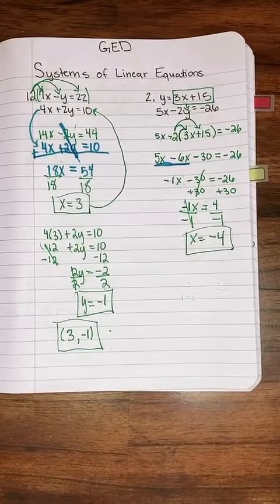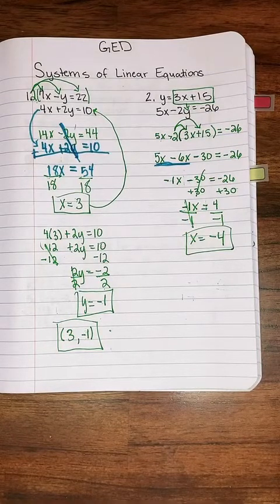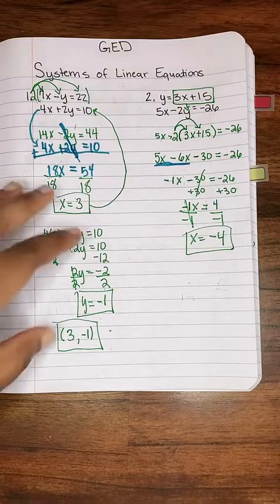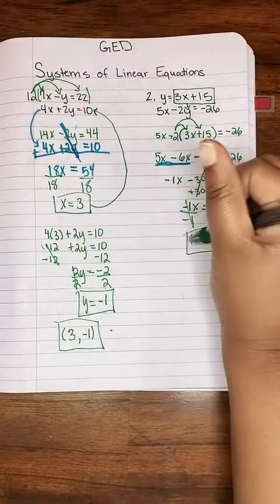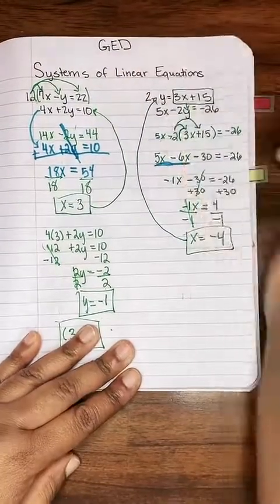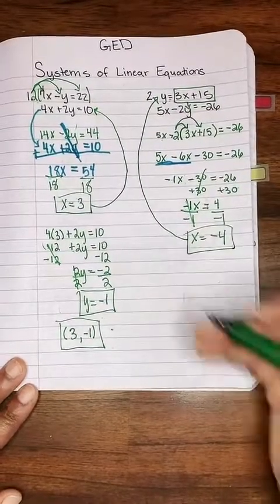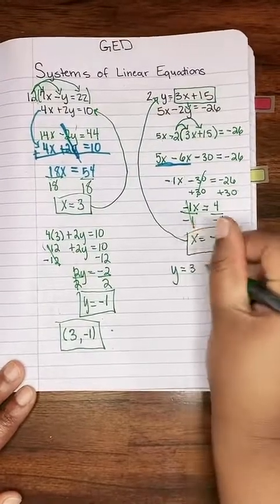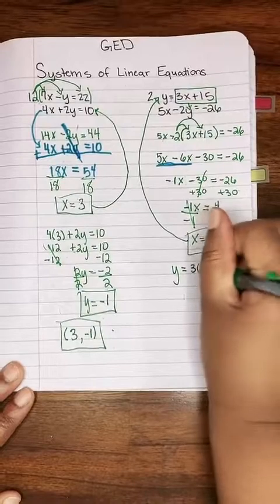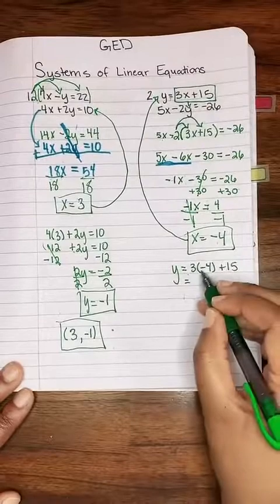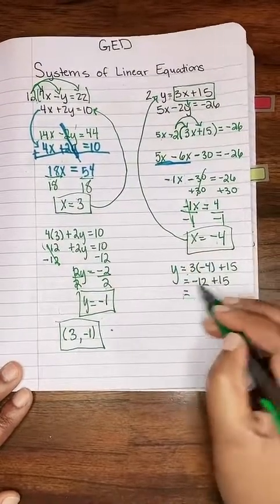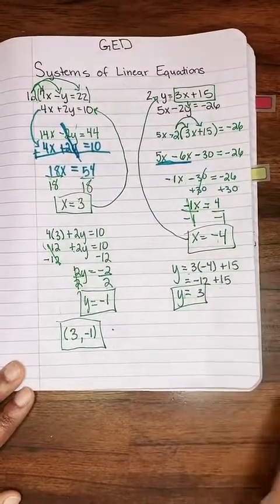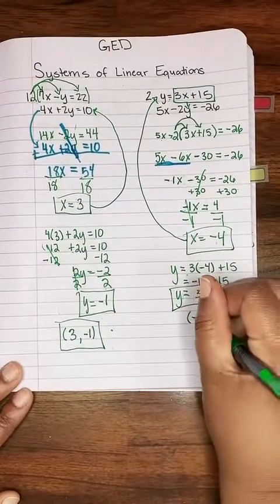Are we done? No — we have to solve for y too. Plug x = negative 4 into the easier equation y = 3x + 15: y = 3(negative 4) + 15 = negative 12 + 15 = 3. So our answer as a point is (negative 4, 3).